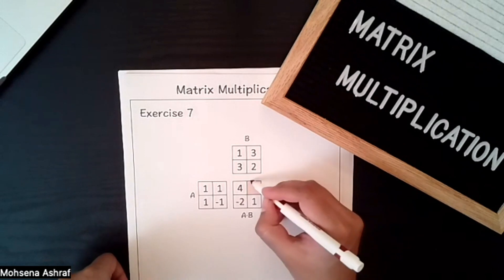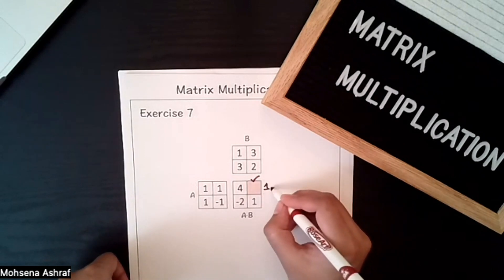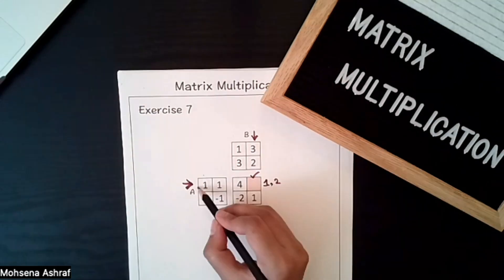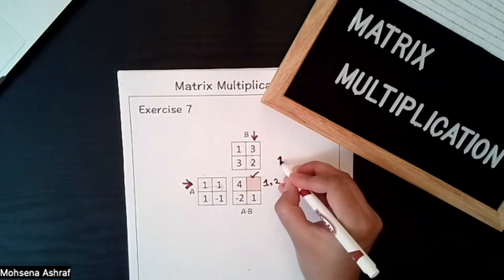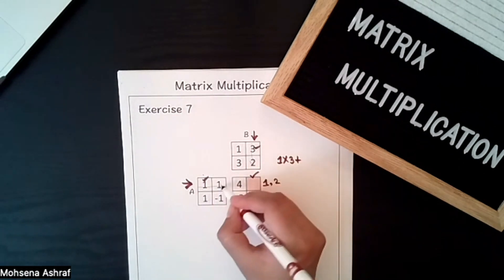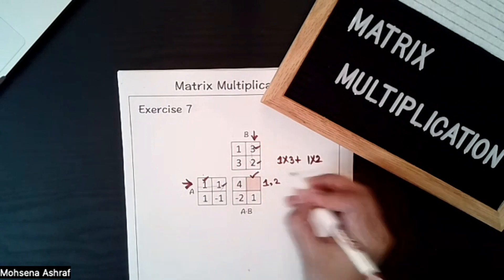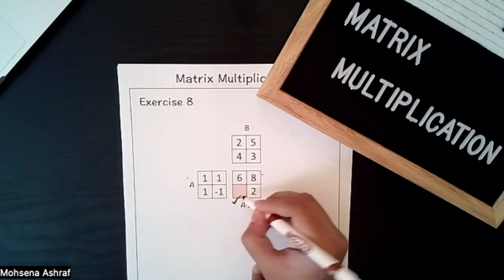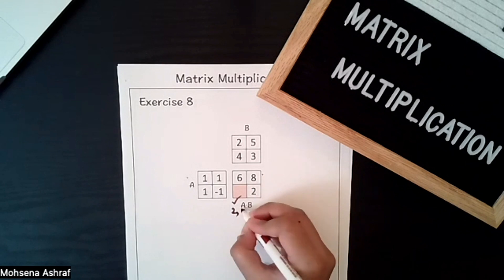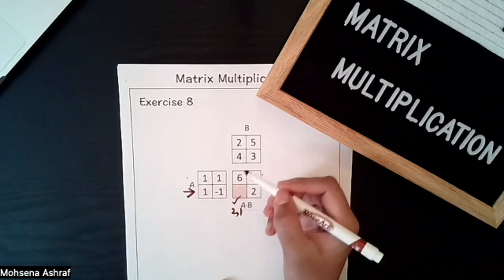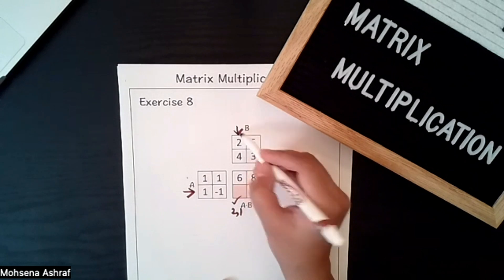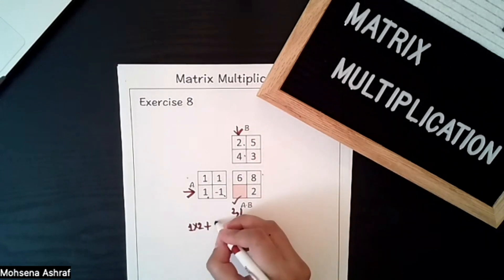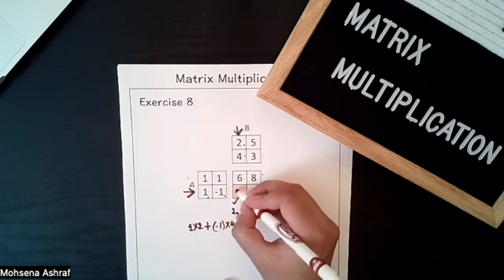The next exercise: we have to find a value at first row, second column. We look at the first row of the first matrix and the second column of the second matrix: 1×3 plus 1×2 = 3+2 = 5. For the next value at second row, first column: 1×2 + (−1)×4 = 2−4 = −2.